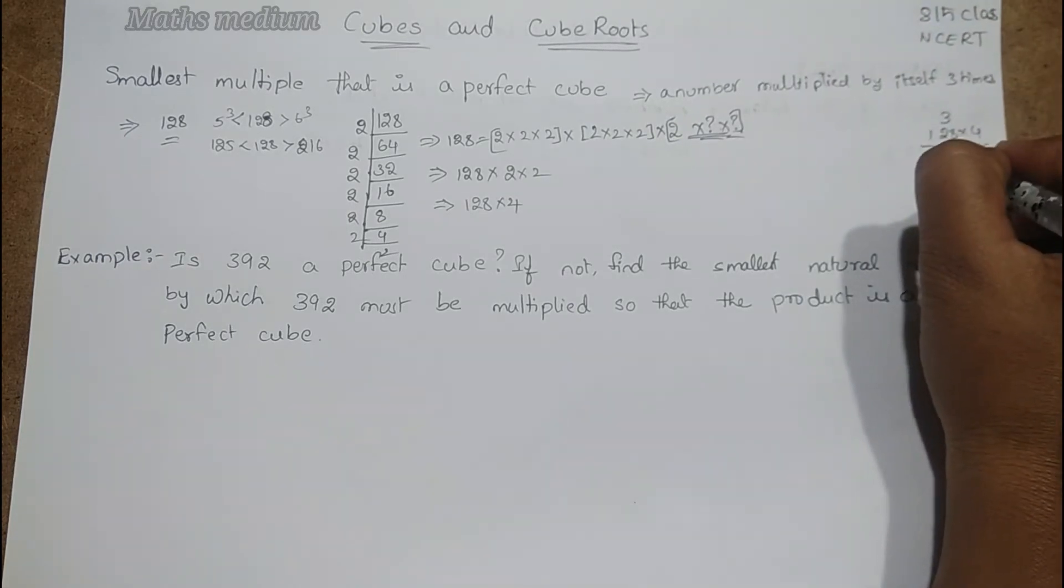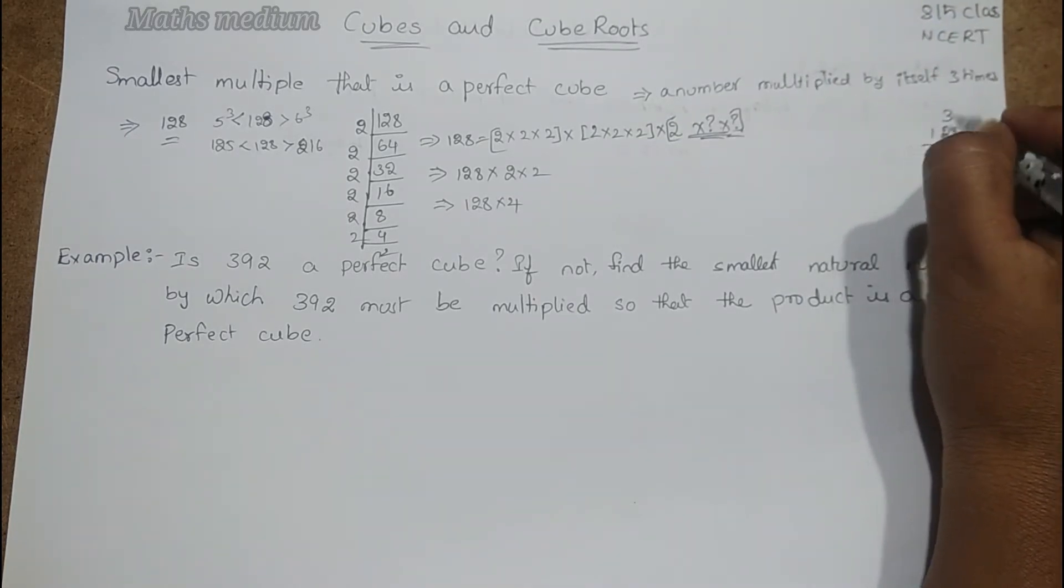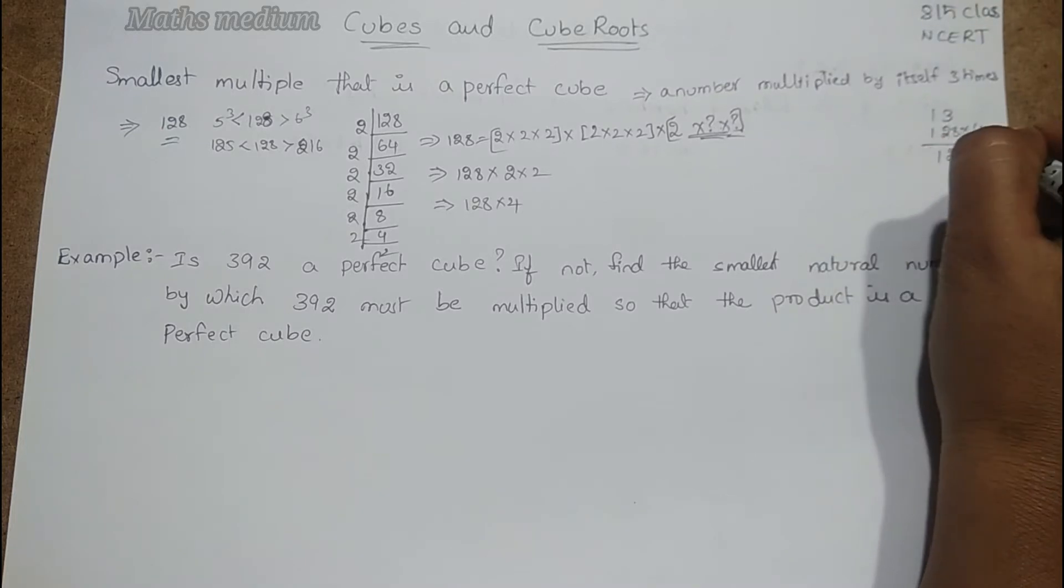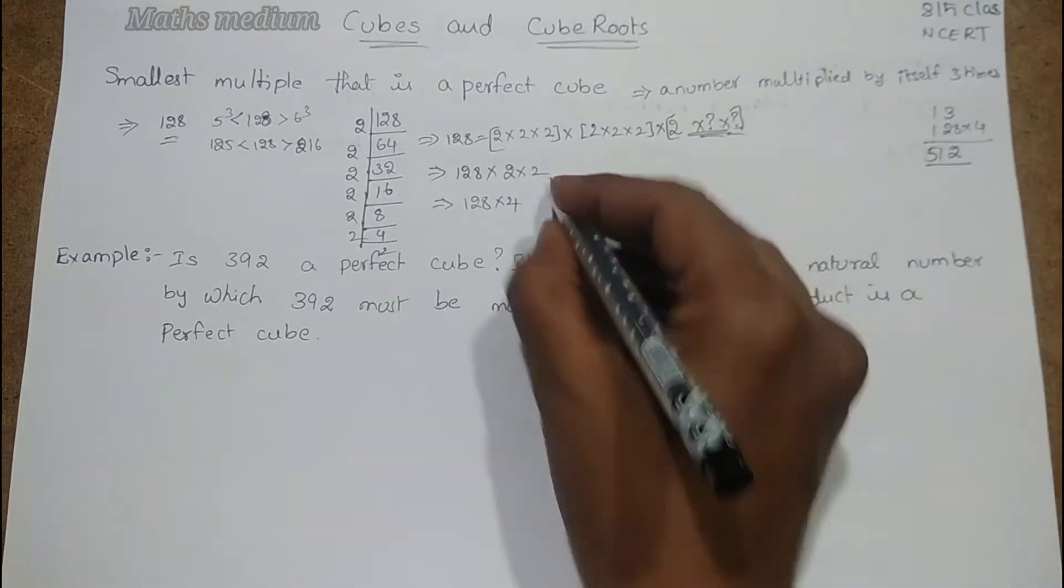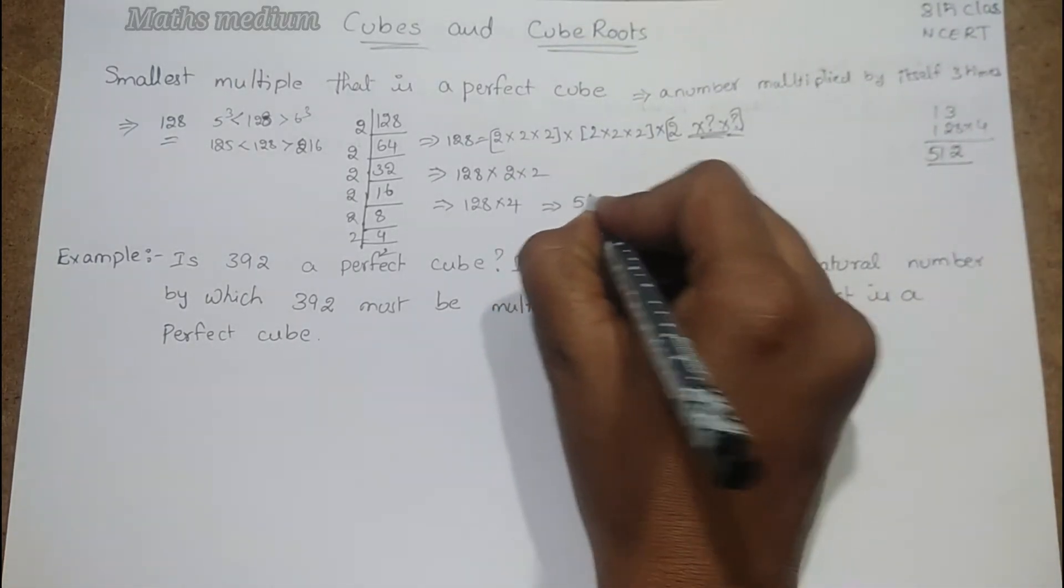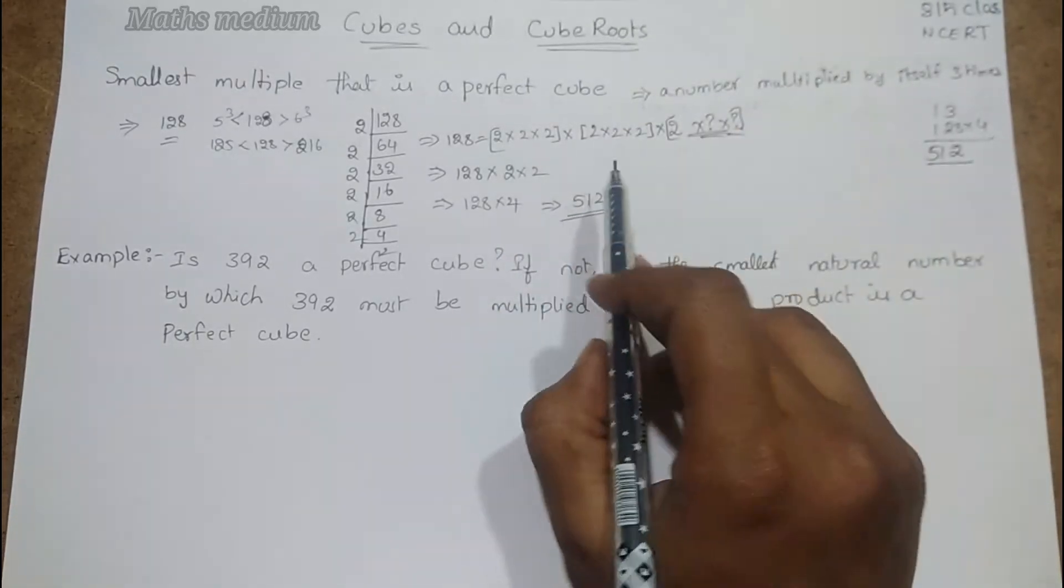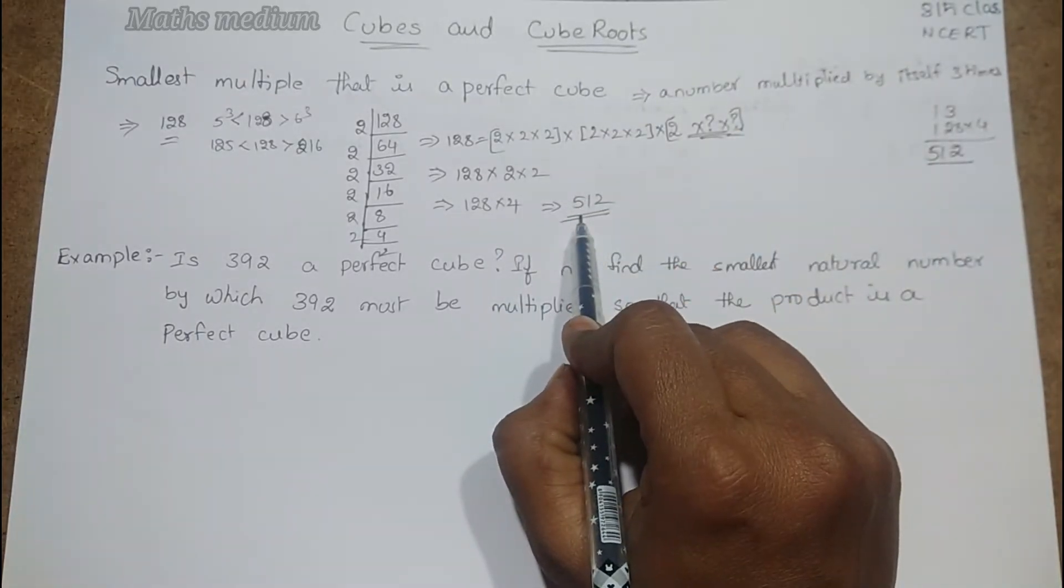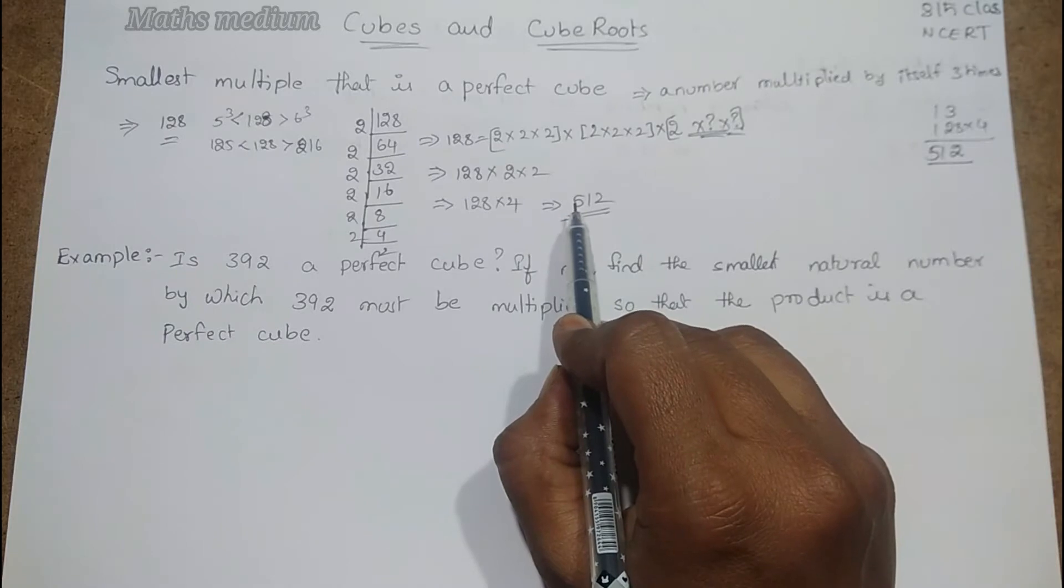4×8 is 32, 4×2 is 8, 9, 10, 11, 4×1 is 4, 5, 512. So 512 is the smallest number that is a perfect cube. This is the way to find the smallest multiple that is a perfect cube.